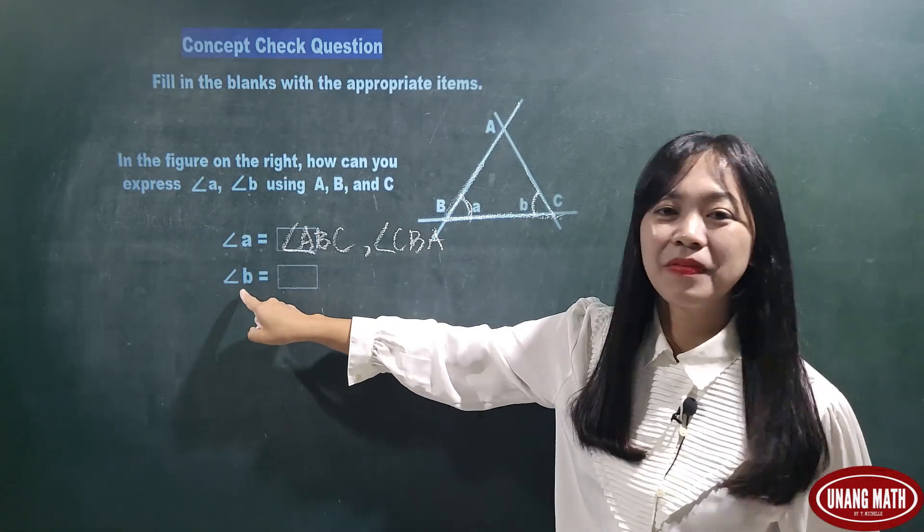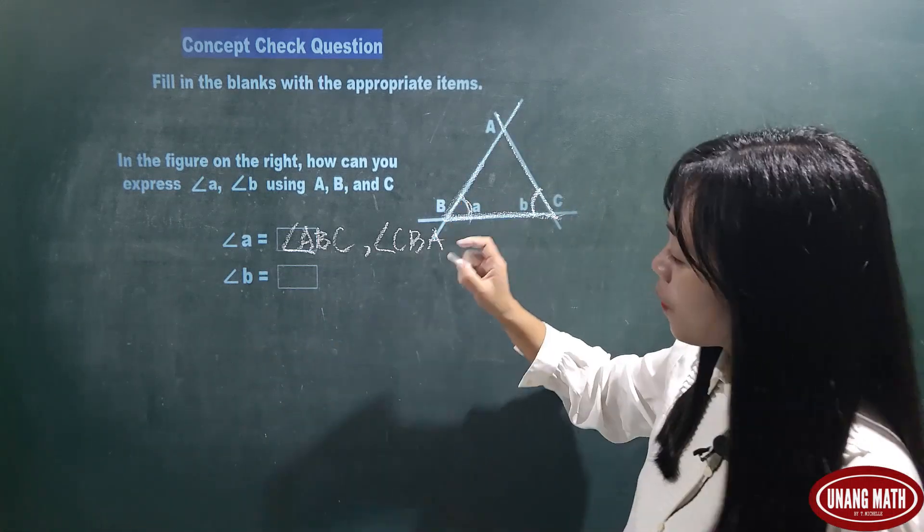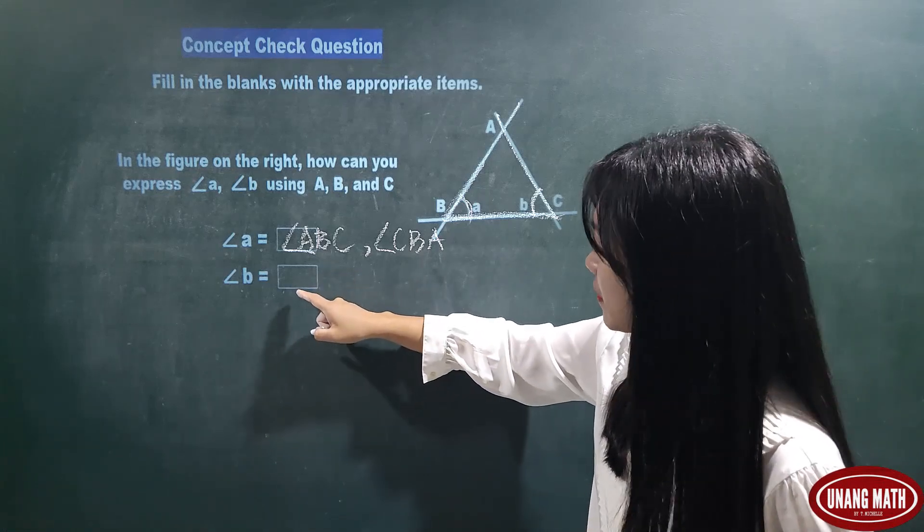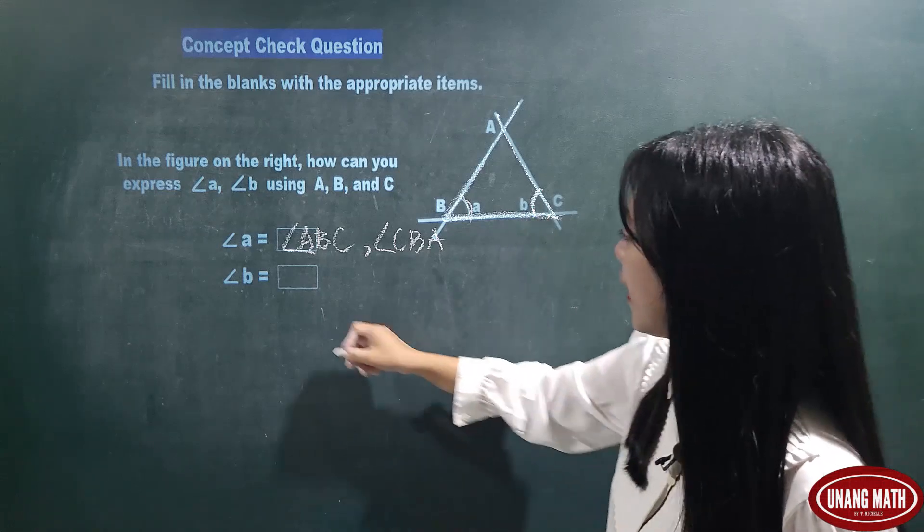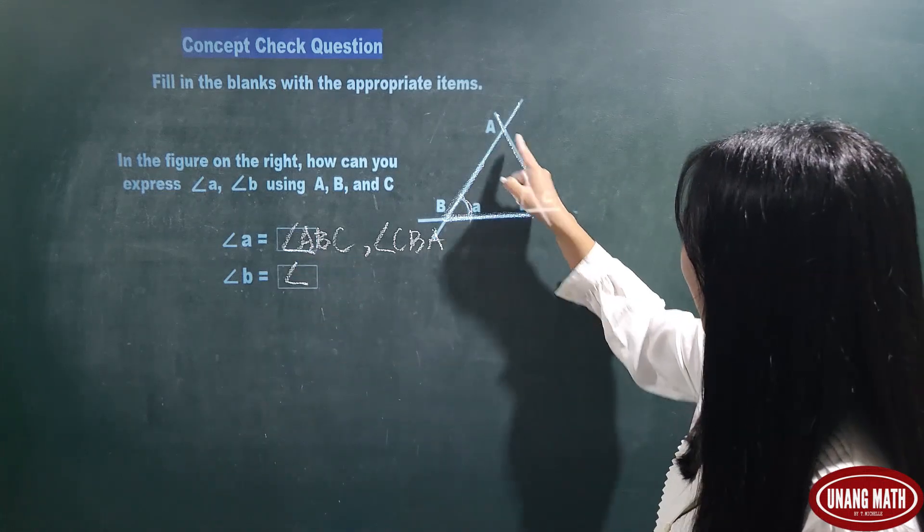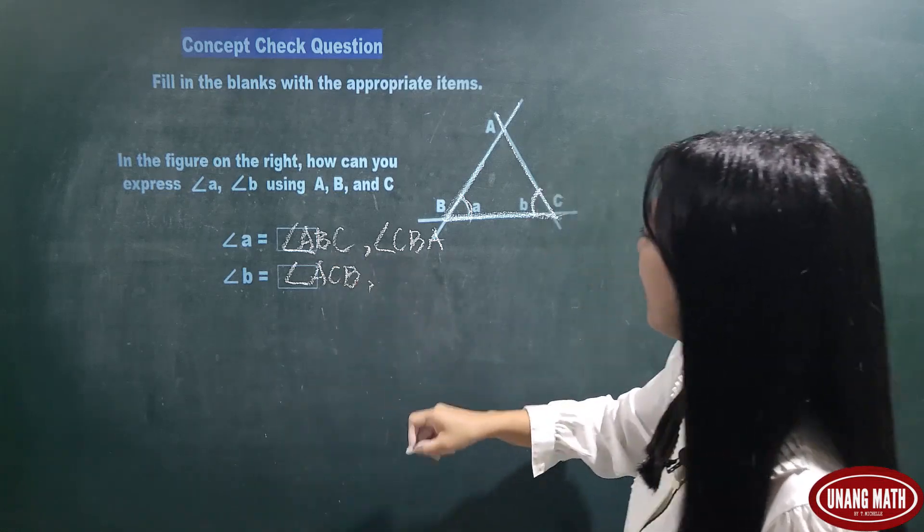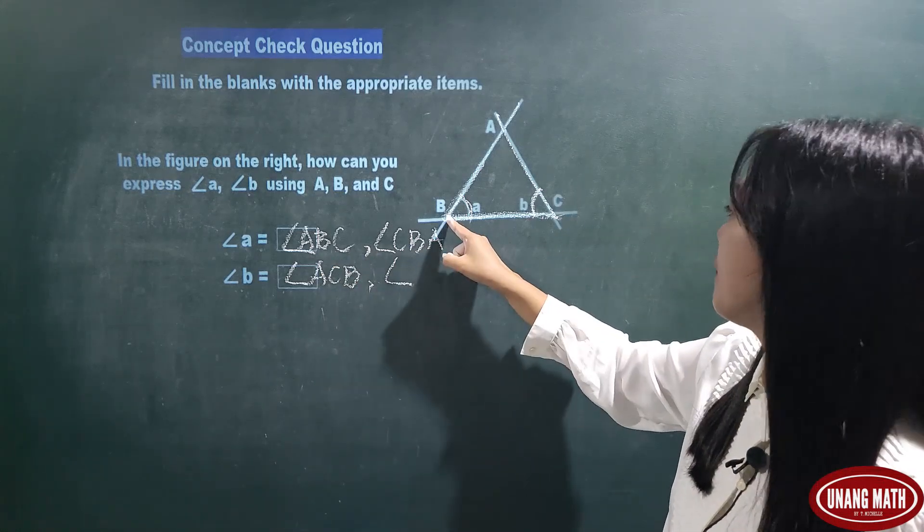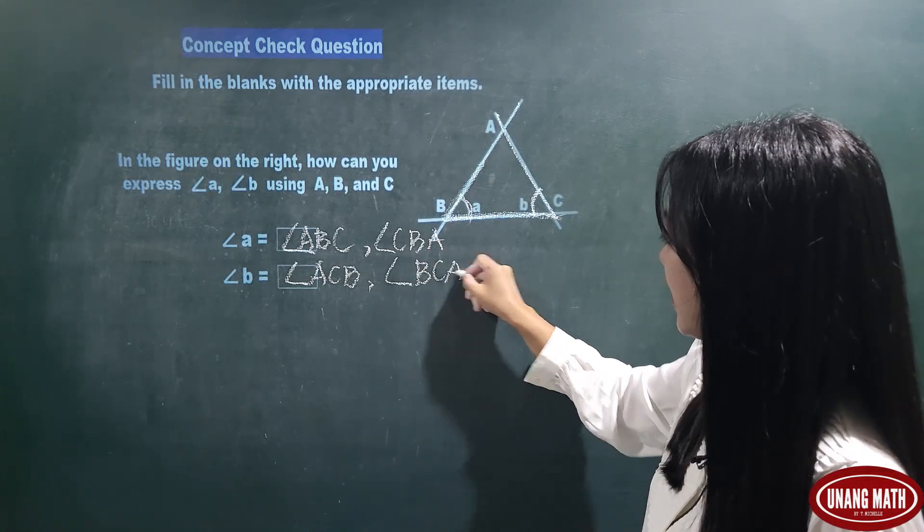Okay, what about angle B? So, this is angle B. How are we going to express this using ABC? So, angle B is equal to angle ACB or angle BCA.